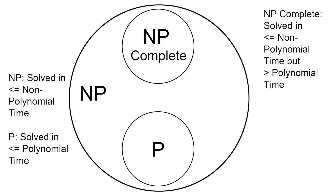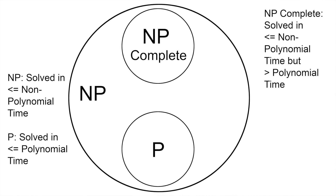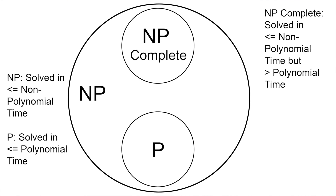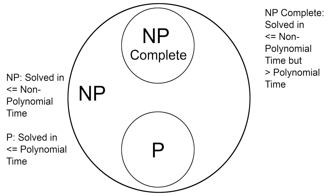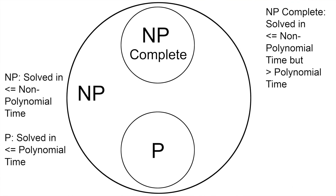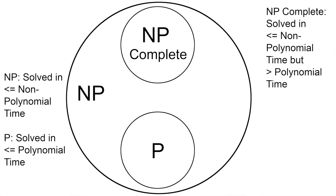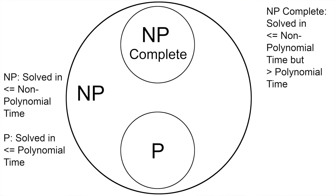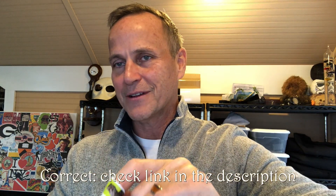In terms of that circle diagram — NP, which is non-polynomial time problems, is a large circle. Within that circle sit the P problems, the polynomial time problems. P is a subset of NP because P is smaller, so P is always going to be contained within NP. And it has been proven, as far as I remember, that there are some NP problems that can be solved in polynomial time when people come up with clever ways of doing that.